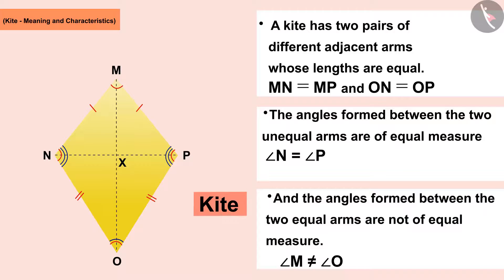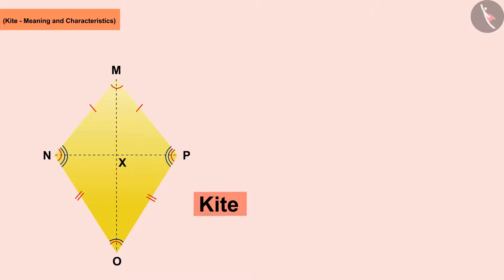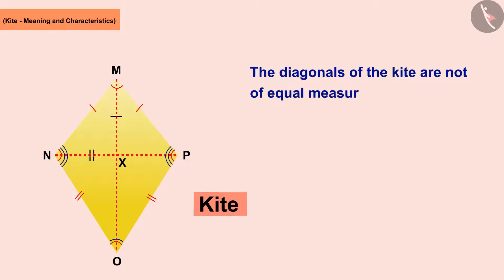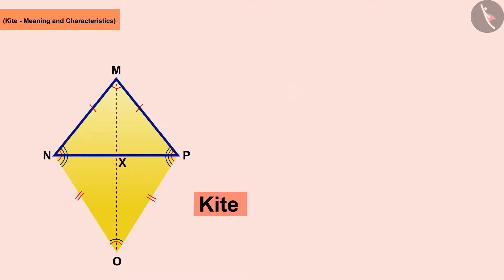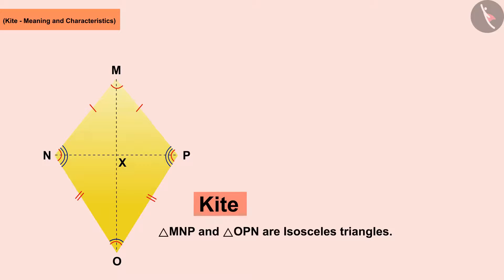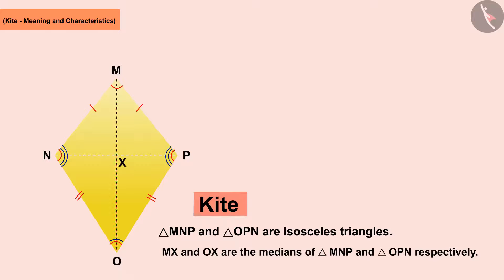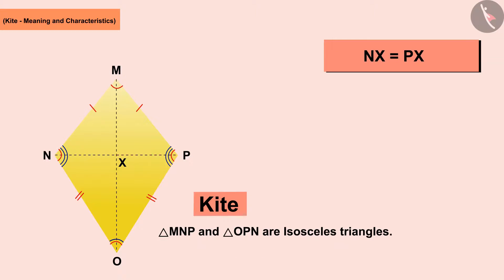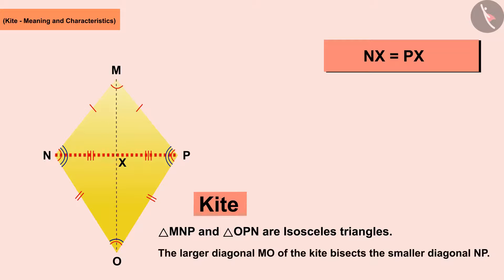Both diagonals of a kite are not of equal measure. Triangles MNP and ONP are both isosceles triangles, each with two sides of equal measure. MX and OX are the medians from vertices M and O of triangles MNP and ONP respectively. With the help of this, NX = PX — the larger diagonal MO bisects the smaller diagonal NP.